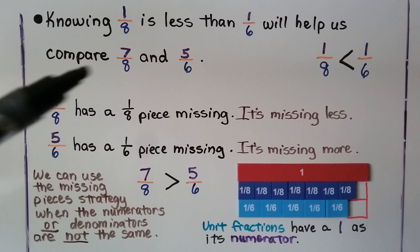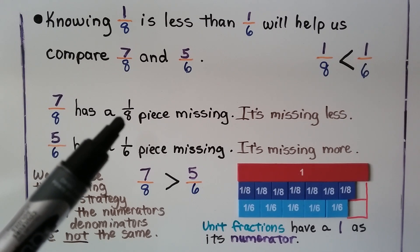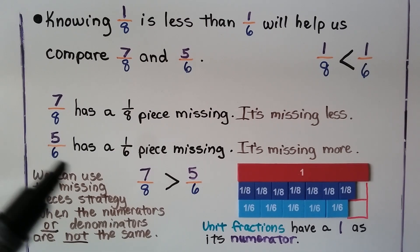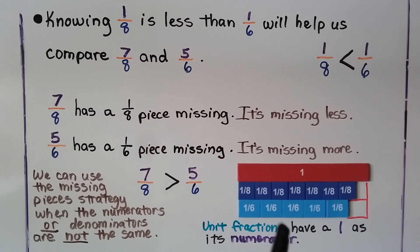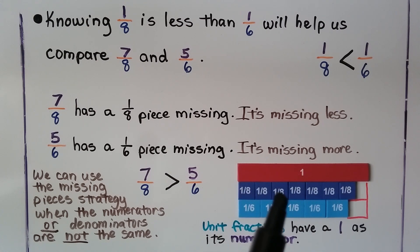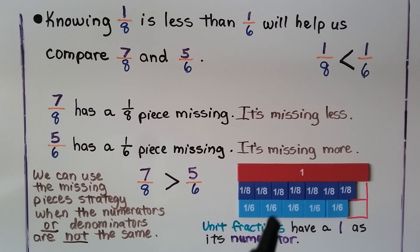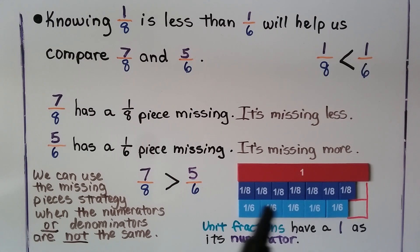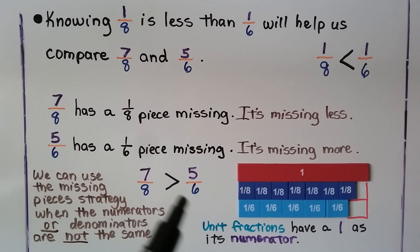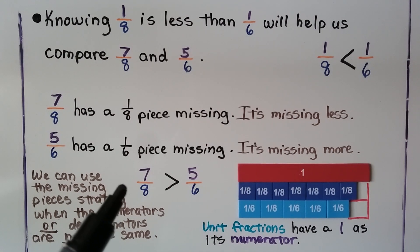We have eighths and sixths in these fractions we're comparing. Seven-eighths has a one-eighth piece missing — it's a little piece, it's missing less. Five-sixths has a one-sixth piece missing — it's missing more. Looking at the fraction bars: seven-eighths is made of seven one-eighth pieces, missing just a small part to be a whole. Five-sixths has five one-sixth pieces but is missing a bigger piece to reach a whole, so it's missing more — it's smaller. So seven-eighths is greater than five-sixths because it's not missing as much; it's missing a smaller piece.